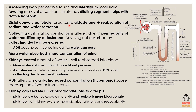The collecting duct is where final concentration is altered, due to the permeability of water modified by aldosterone. Anything not absorbed by the collecting duct will be excreted as urine. ADH adds water channels (aquaporins) in the collecting duct so more water can pass through — the more water absorbed, the more concentrated the urine.